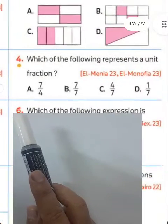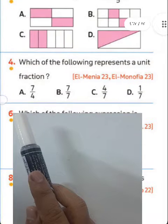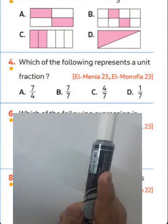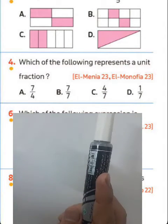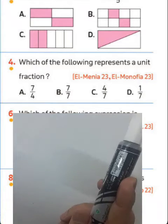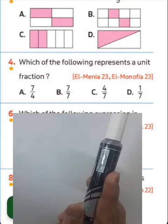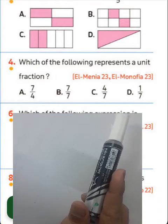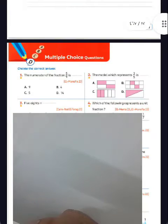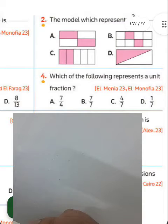Question number four: which of the following represents a unit fraction? A unit fraction means the numerator is 1, so you must write 1 over 7. Choose letter D — the result here is letter D. 1 over 7, we call it a unit fraction.